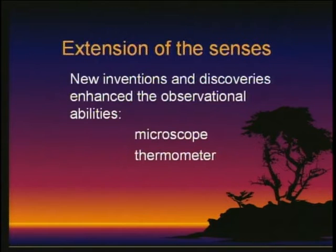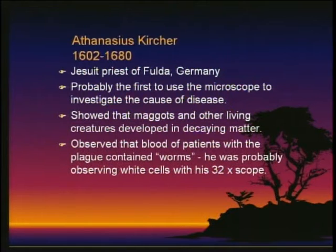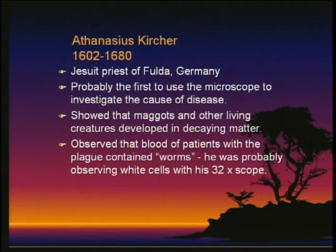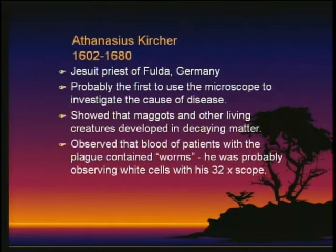We're limited to our senses, but over the course of time there are new inventions and discoveries that enhance our abilities to observe — such as the microscope and the thermometer. In the 17th century, Kircher, a Jesuit priest in Germany, was probably the first to use the microscope to investigate the cause of diseases. He showed that maggots and other living creatures developed in decaying matter. Using his 35X scope, he observed strings of something when examining blood of patients with the plague, concluding those must be worms.